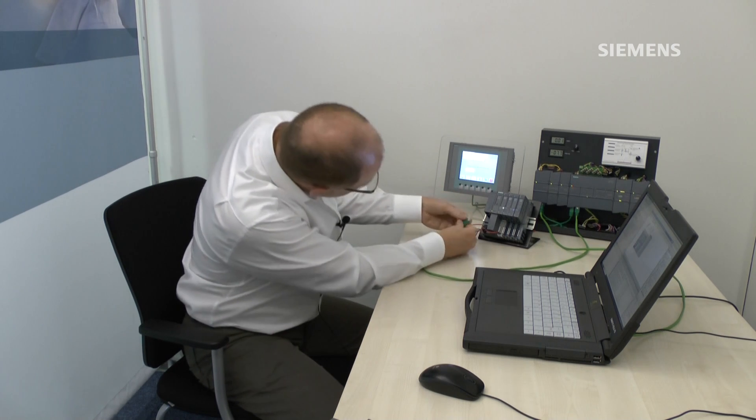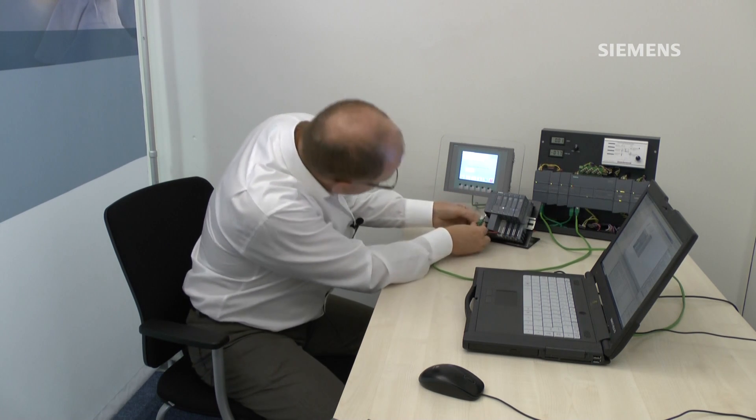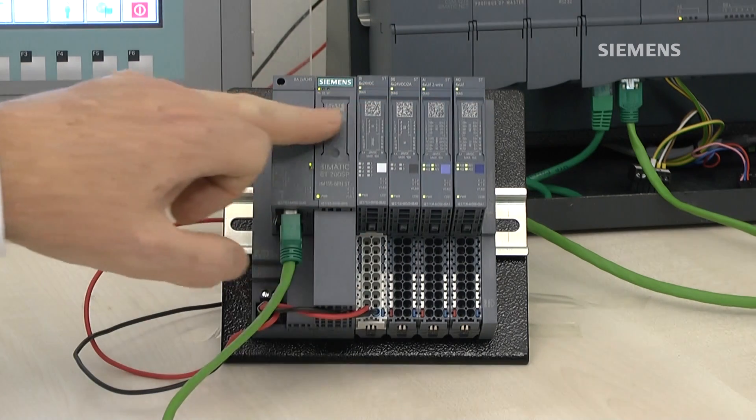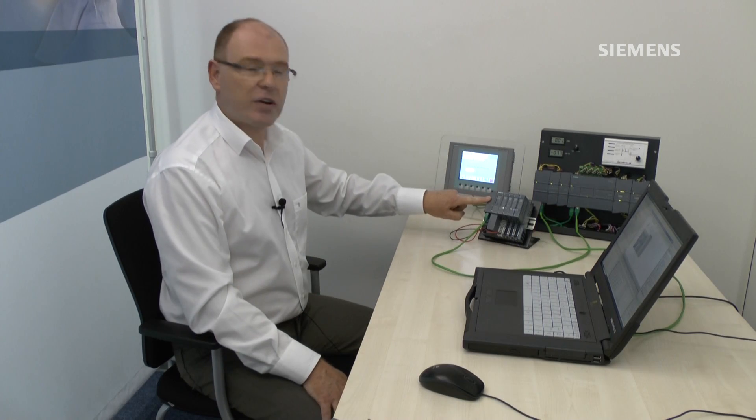And now I put my ethernet cable into the same ethernet port. The hardware configuration is downloaded by the S71200. And a few seconds time, the S71200 error light will stop flashing. And the ET200SP node will once again be in operation.